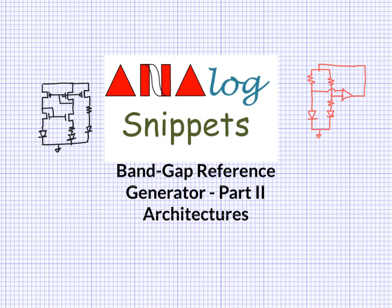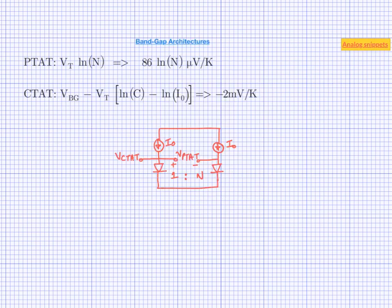In the last video we looked at PTAT and CTAT voltages. In this video we will see different ways to combine these two voltages to generate a temperature-independent bandgap voltage. We derived the PTAT and CTAT voltage equations, and here we have two aims: one is to make these two slopes equal, and the next is to combine these two voltages to form the bandgap reference voltage.